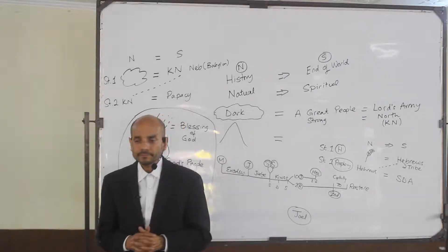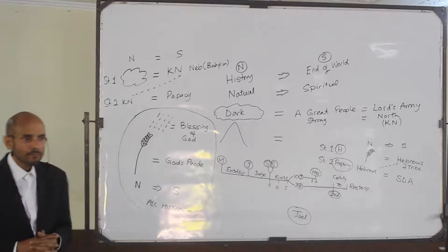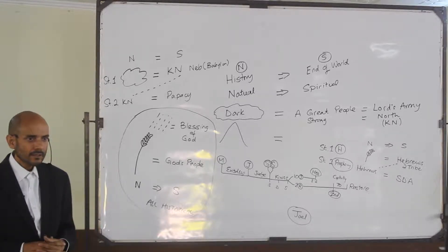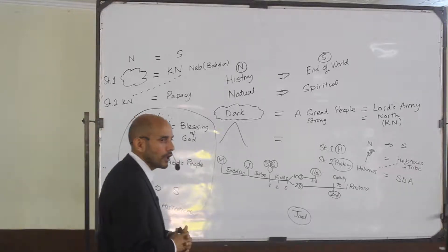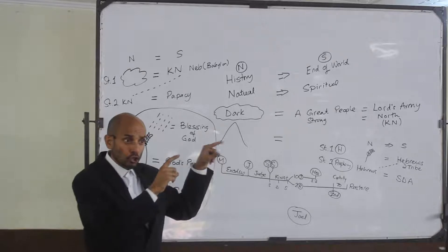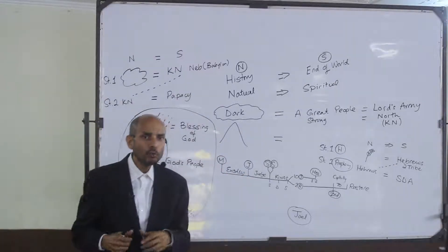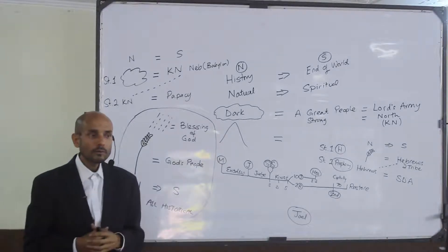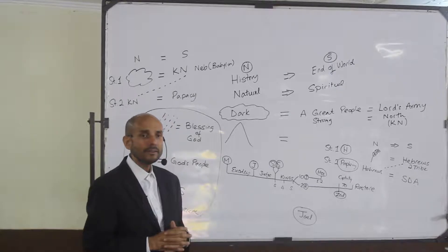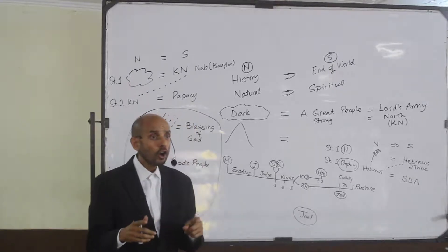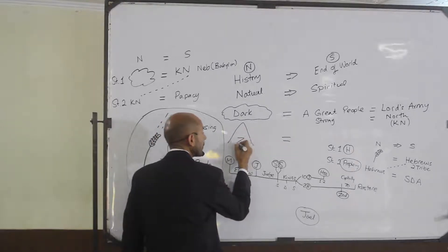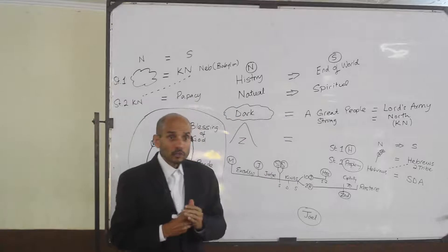Let's summarize. Chapter 1 verse 2 — 'the this' was the destruction by the Assyrians. God said: look at this, this is about to happen to you. If you repent it would be okay, but if you don't repent, I'm going to destroy this mountain — which is Zion, which is Jerusalem. So I'm going to destroy Jerusalem.